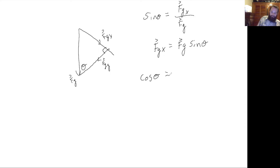Cosine theta equals adjacent over hypotenuse. So fg y equals force of gravity. So now the y component of gravity is fg cosine theta.